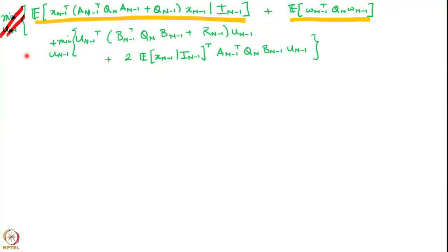In the previous part we arrived at an expression where the minimization over u_(n-1) can only be brought down to this particular form. Because this is linear in x_(n-1) and quadratic in u_(n-1), and moreover this is a convex quadratic in u_(n-1) — this convexity can be checked just like we did for the perfect information case — we can find the minimizing u_(n-1) by simply setting the derivative of this term equal to zero.